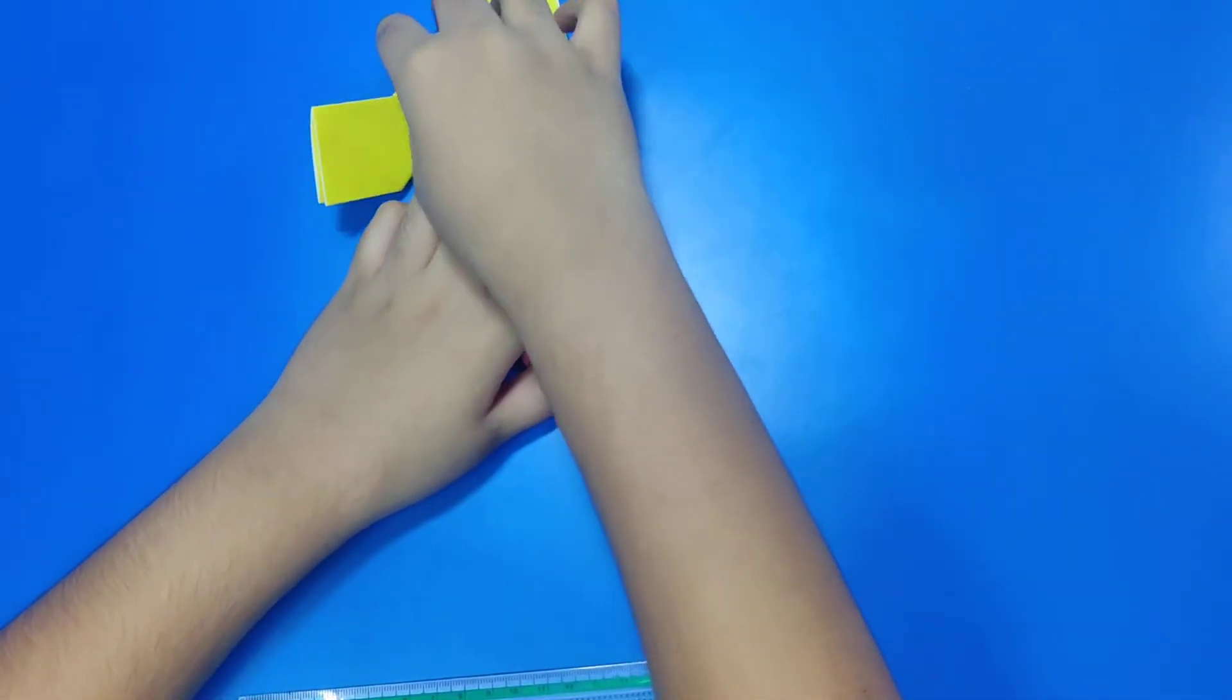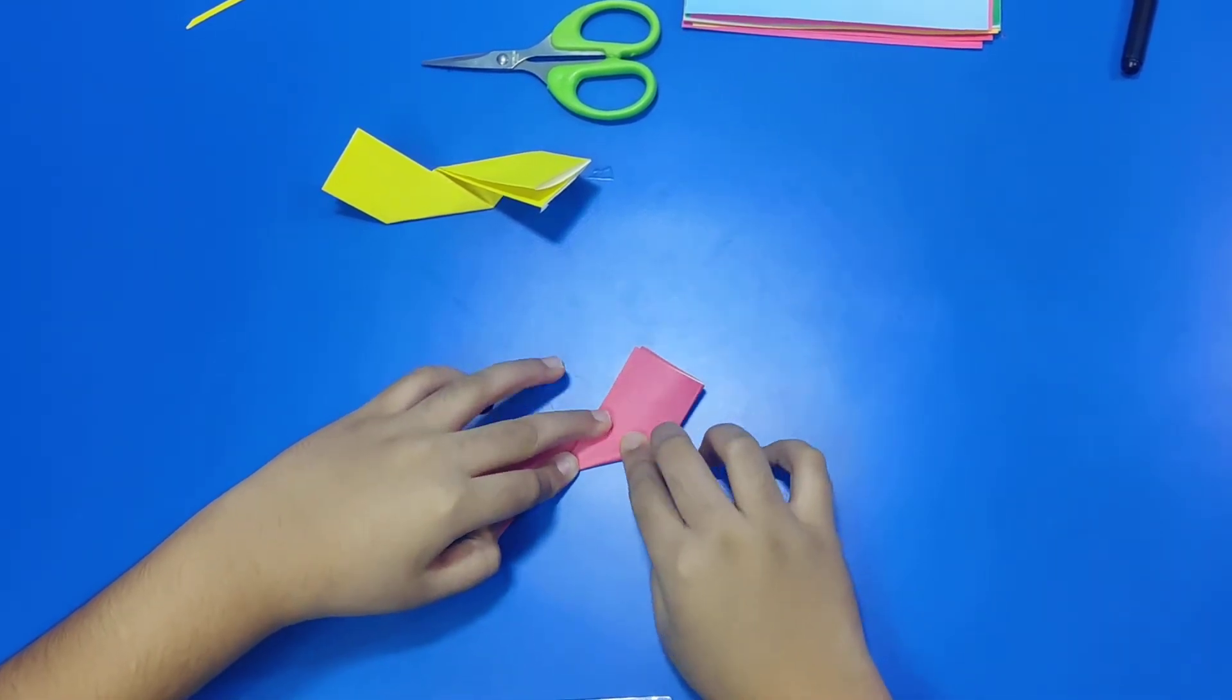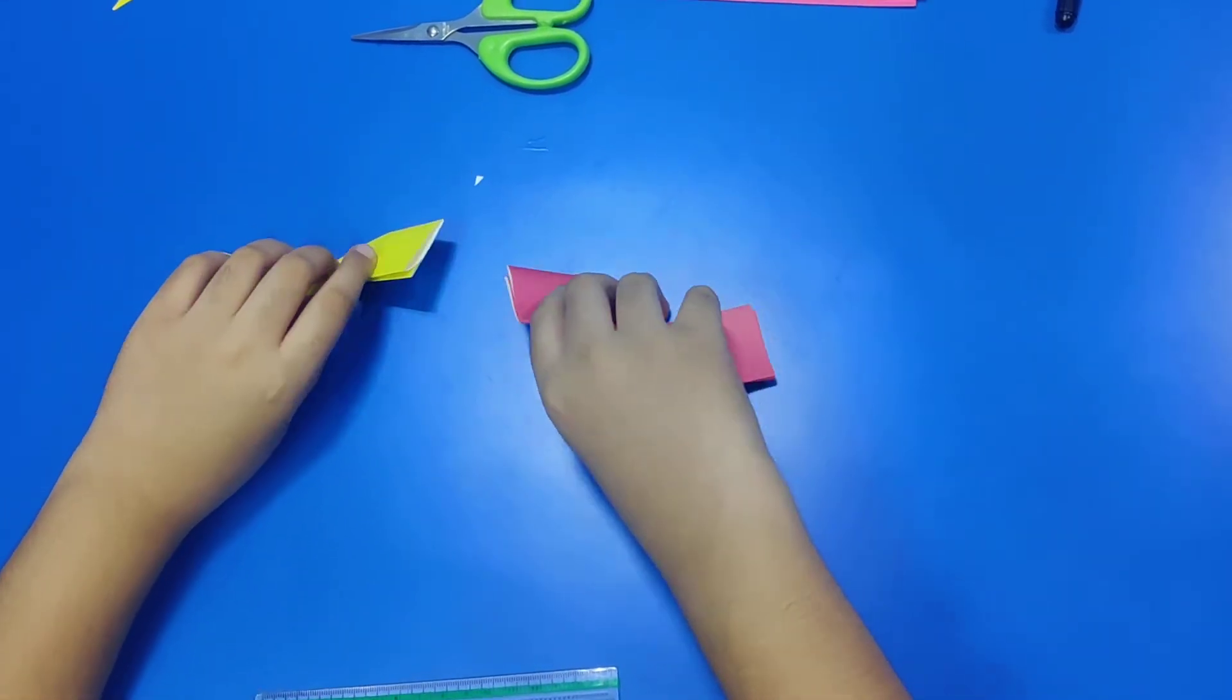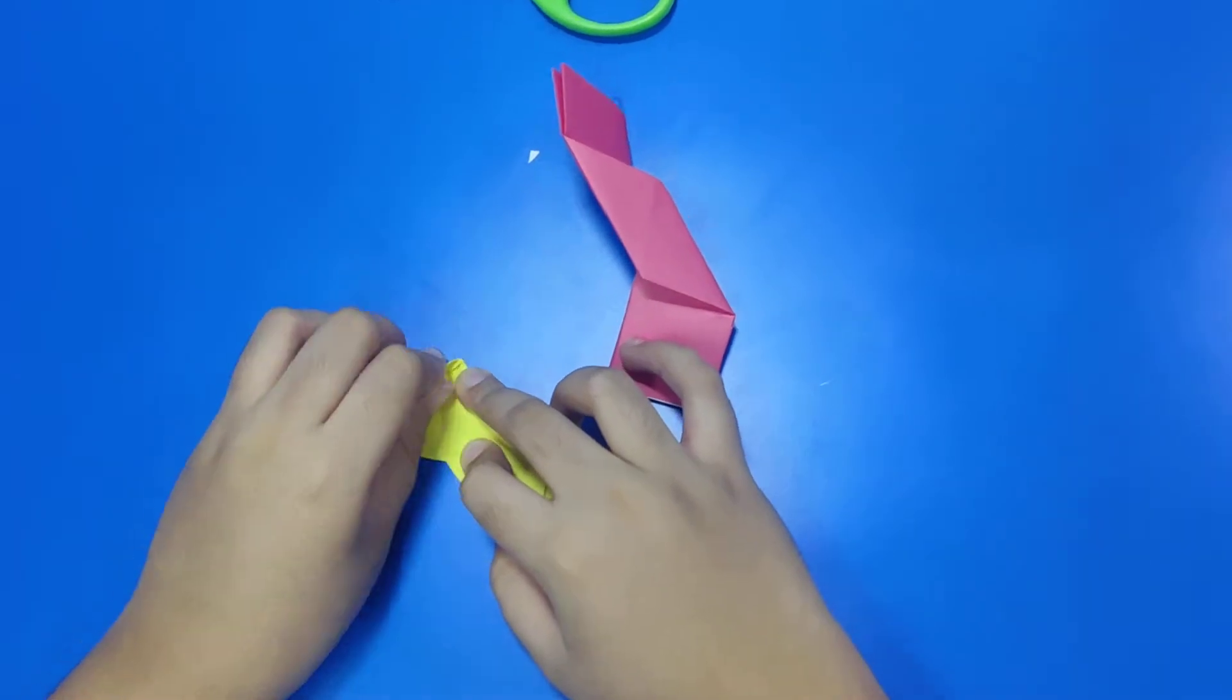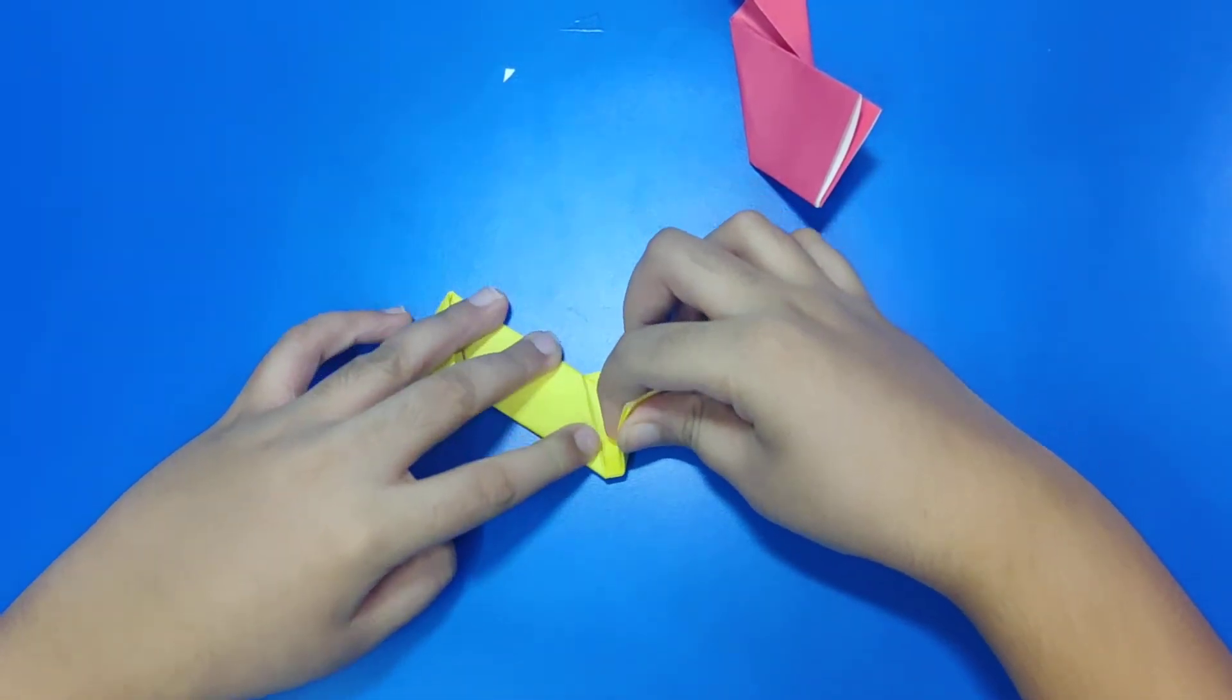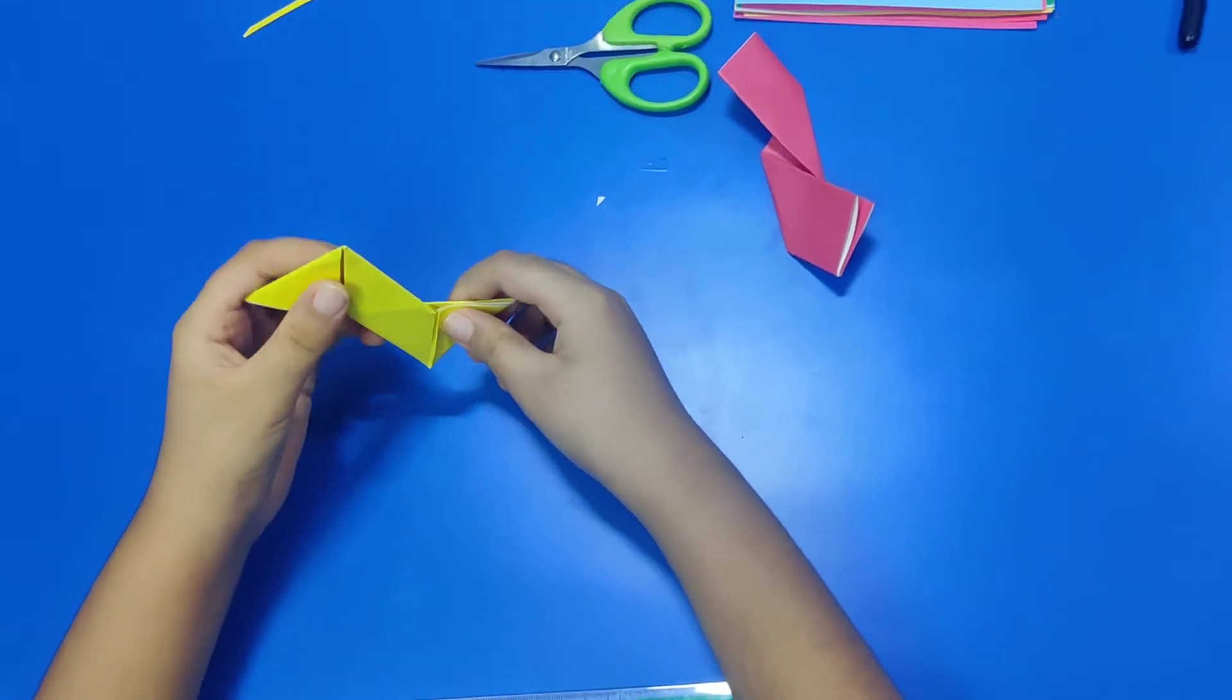Now, fold this in this opposite direction, like this. After doing, it should look like this. Now, hold it like this. And now, same here. It should look like this.